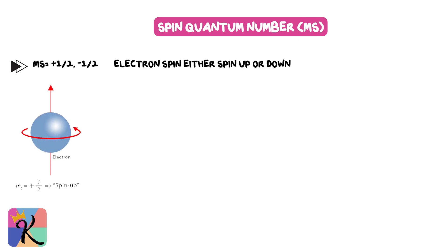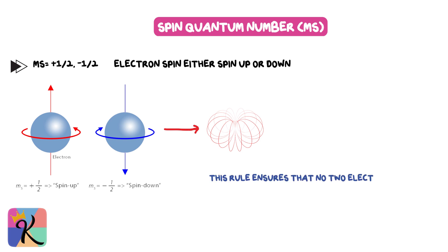The final quantum number is the spin quantum number (ms). Electrons can spin either up (+1/2) or down (-1/2), and this creates a magnetic field. Each orbital can hold two electrons, but they must have opposite spins, one with +1/2 and one with -1/2. This rule ensures that no two electrons in the same orbital have the exact same set of quantum numbers.